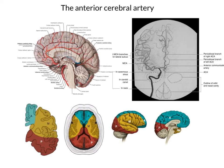The anterior cerebral artery also has a very important white matter distribution — to the corpus callosum. As the anterior cerebral artery loops around the corpus callosum over its superior surface, it sends lots of little branches into that white matter pathway supplying the corpus callosum. A large stroke affecting the anterior cerebral artery could result in damage to the corpus callosum and the effects of disconnecting the two hemispheres from each other.